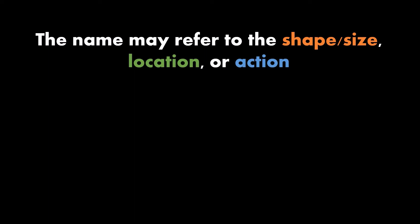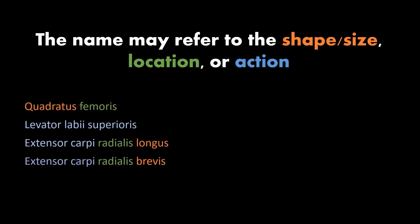One of the nice things about muscles is that a lot of the names are very descriptive. They might tell you something about the shape, the location, or even the action the muscle is doing. That's my favorite — when it includes the action, it's like two for the price of one. An example of one that tells us about shape and location would be the quadratus femoris, which is a square-shaped muscle attached to the femur.